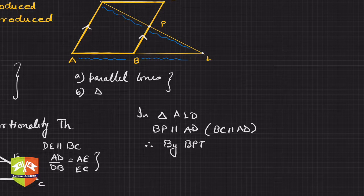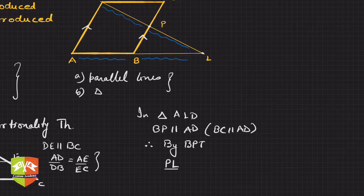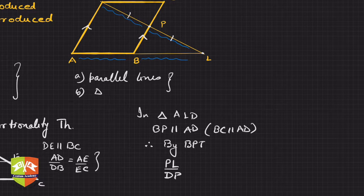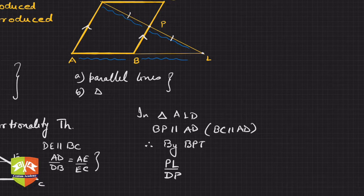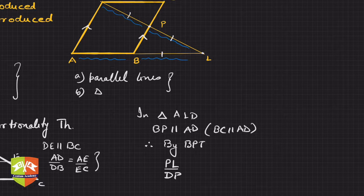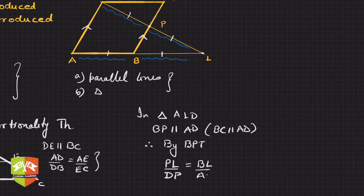By BPT in triangle ALD, we can say PL upon DP is equal to BL upon AB. Let me highlight this triangle — we are considering this triangle, and in it there is a parallel line, so it is similar to the BPT case.